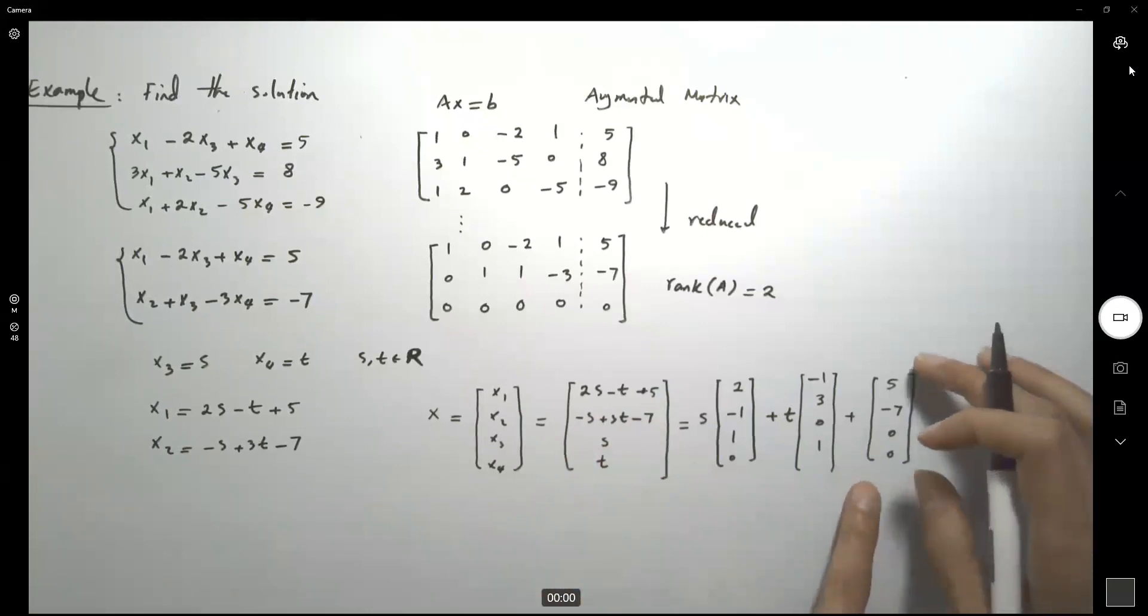This guy that has no scalar in it is denoted by x sub p, particular solution. This is what you learn in ODE, Ordinary Differential Equation, x sub p is a particular solution.